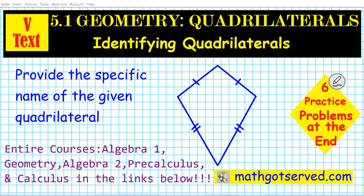Good day students, welcome to mathgotserved.com. In this clip we're going to be going over section 5.1 of our virtual geometry text on quadrilaterals. We're going to be looking at how to identify quadrilaterals. An example problem of what we'll be covering is presented here — to provide a specific name of given quadrilaterals, such as a quadrilateral with two pairs of distinct congruent sides.